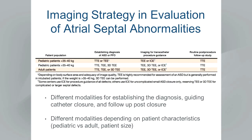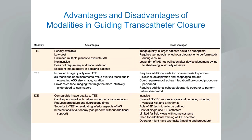A key take-home point is that different modalities serve different roles — diagnosis, patient selection, guiding catheter closure, and follow-up. The choice of modality depends heavily on patient characteristics, whether we're talking about a pediatric or adult patient, and the actual size of the patient. A further table in the document looks at advantages and disadvantages of the different modalities in guiding transcatheter closure.